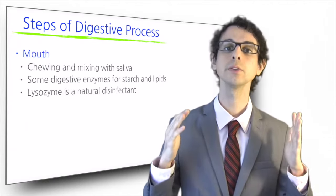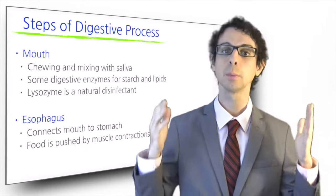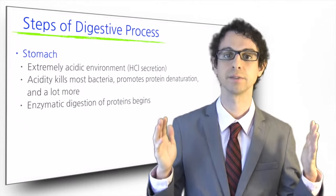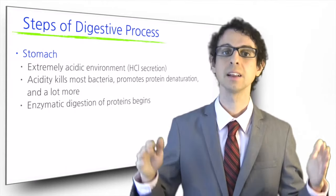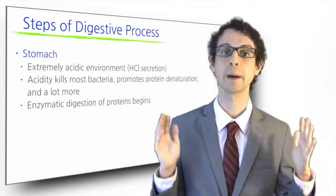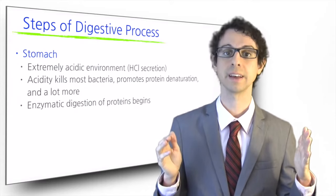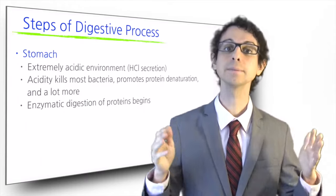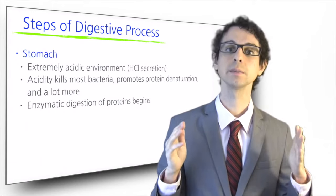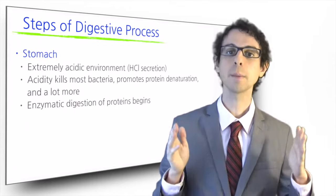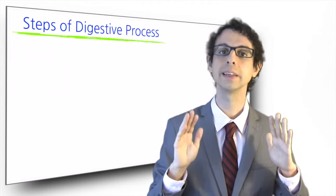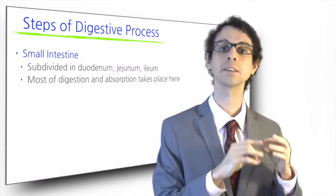Once swallowed, our food travels all the way down to our stomach through the esophagus, pushed by muscle contractions. In the stomach, the food is exposed to an extremely acidic environment, because its cells secrete hydrochloric acid. This extreme acidity has multiple functions: it kills most potentially harmful bacteria coming from food, it activates some digestive enzymes, it enhances the absorption of some minerals, it helps break down connective tissues in meat, and it promotes protein denaturation. The stomach also makes an enzyme that starts digesting proteins. The stomach content is then pushed little by little into the small intestine, which connects the stomach to the large intestine.